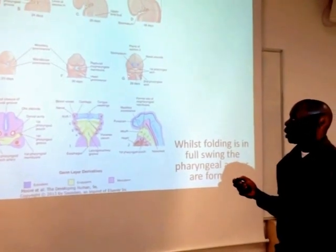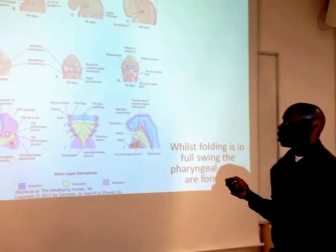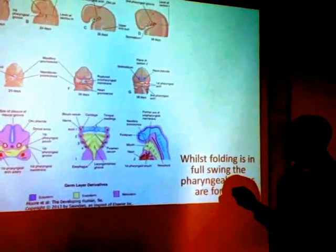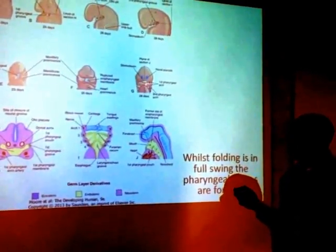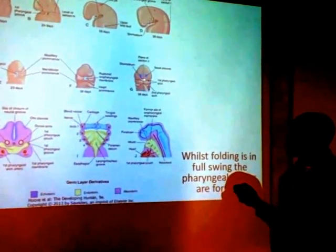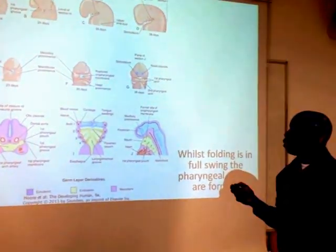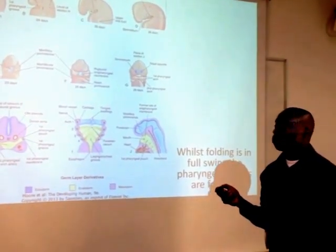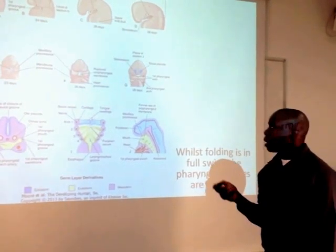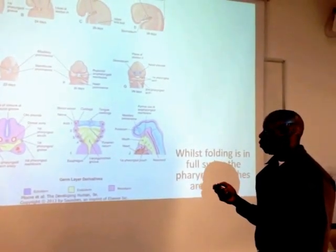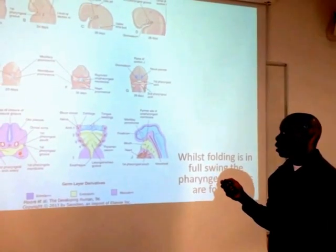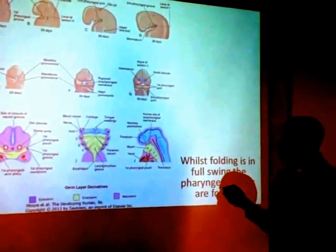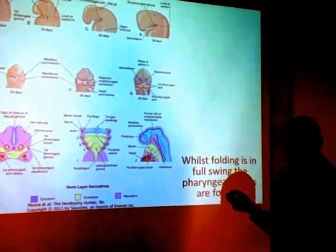What do these pharyngeal arches then go on to become? Well, this is my first arch. The first arch is split up into two parts — it's made of my maxillary part and my mandibular part. So this is going to become my mandible, this part is going to become my maxilla, and this little bit here, which is a big forehead, is called my frontal nasal process — it's got a bit of frontal and also a bit of nose. This is going to contribute to the formation of the face: the forehead and nose, the maxilla which contains the upper jaw, and the mandible which is the bottom end of the mouth.